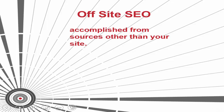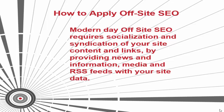Modern day off-site SEO requires socialization and syndication of your site by content and links — providing news and information, media, and RSS feeds with your site data. As you develop more content, deeper links will evolve from blogs, news, and media companies, which will cause your authority to grow. Social media is probably the most influential way to gain high quality backlinks from authority websites — sites like Facebook, Twitter, Google Plus, and many more. It's highly recommended that you encourage visitors to use social bookmarks throughout your site to build deep inbound links for your keyword-rich page content.